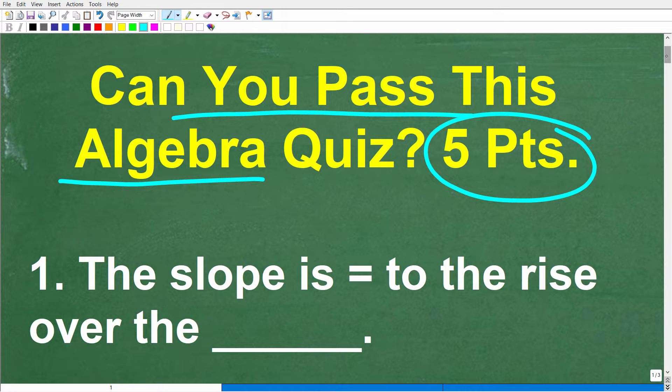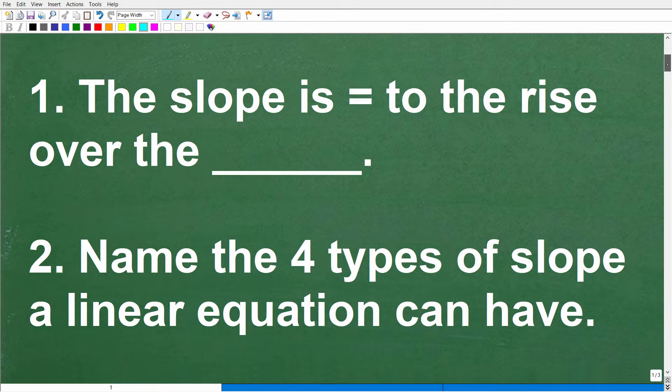But first, let me show you the questions. So the first question is: the slope is equal to the rise over the blank. The second question is, name the four types of slope a linear equation can have.